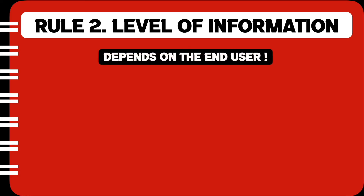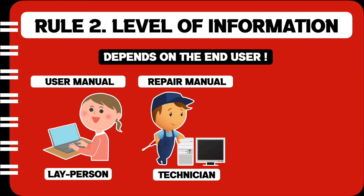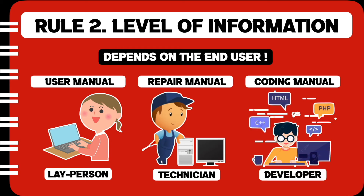Rule number two talks about the level of information. Now, how much and where you should pitch your information depends on the end user. As an expert, if you are writing a user manual, we need to keep in mind that this will be read by laypersons — for example, a homemaker, an office worker, or even a school-going kid. However, if you are writing a repair manual, we need to understand that this will be read by a technician whose ultimate purpose will be to repair a piece that is faulty. Lastly, if you are writing a coding manual, you must remember that somebody who is a developer is going to be reading this manual, perhaps on how to run the hardware.